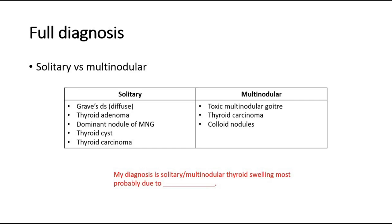For a full diagnosis, thyroid swelling is divided into solitary versus multinodular. For a solitary nodule, differentials include Graves' disease with diffuse swelling, thyroid adenoma, a dominant nodule of multinodular goiter, thyroid cyst, or thyroid carcinoma. For multinodular thyroid swelling, consider toxic multinodular goiter if there are thyroid toxicosis signs, thyroid carcinoma, or colloid nodules. During presentation, state whether it is a solitary or multinodular thyroid swelling, most probably due to a specific cause depending on clinical findings.